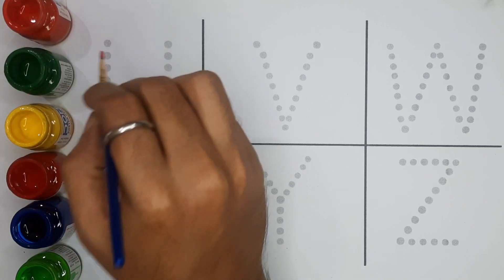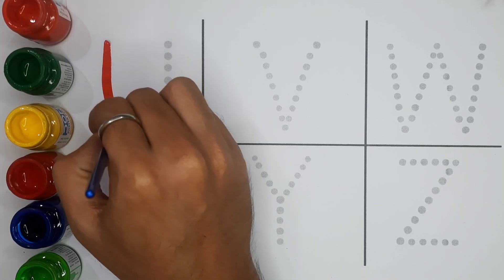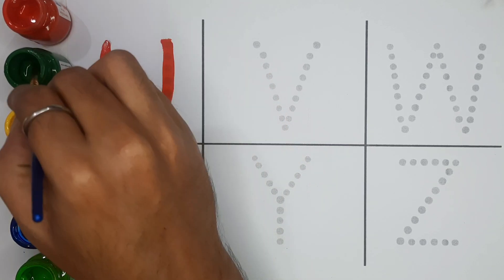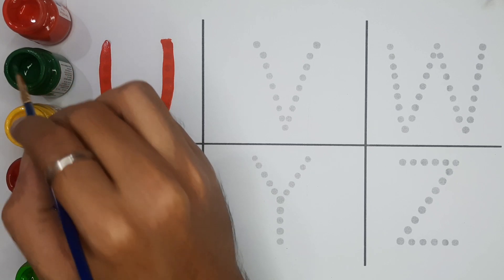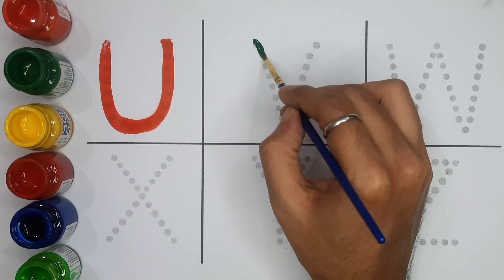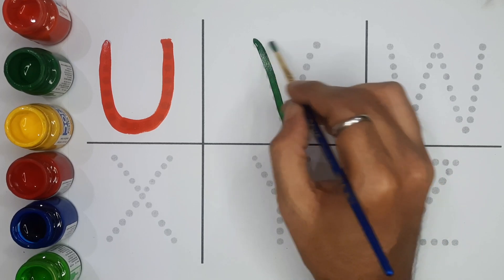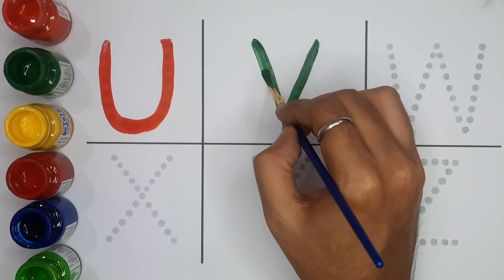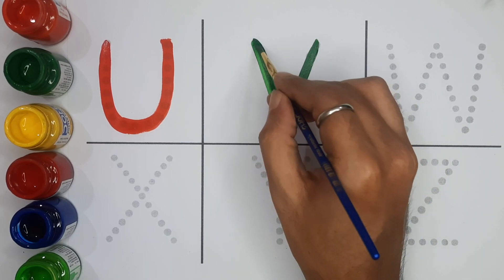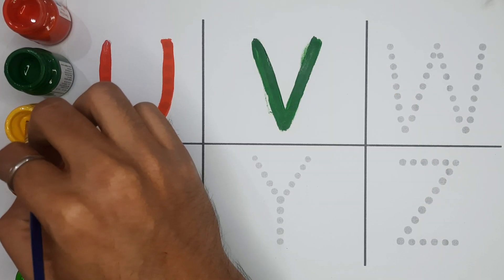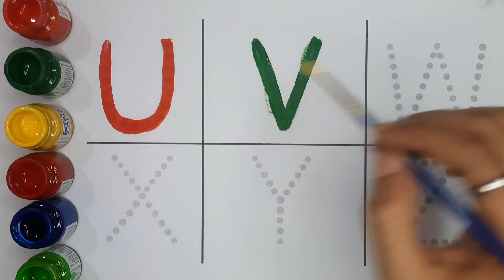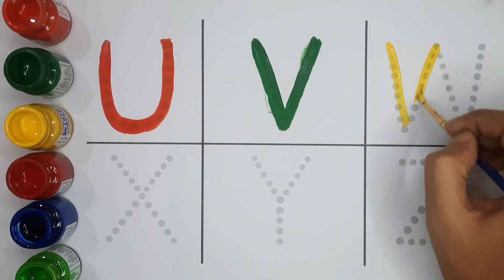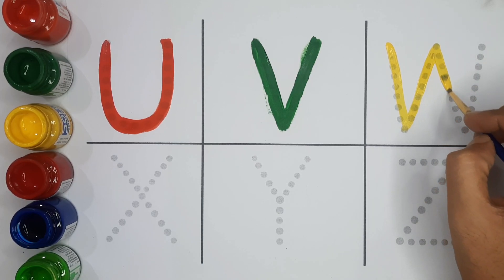Orange color. U, U for umbrella. Green color. V, V for vehicle. Yellow color. W for watermelon.